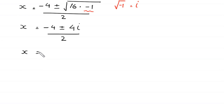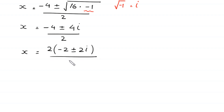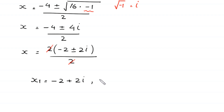So x = (−4 ± 4i) / 2. We can factor out 2 from the numerator to get 2(−2 ± 2i) / 2, and the 2s cancel. This gives us two values: x₁ = −2 + 2i and x₂ = −2 − 2i.